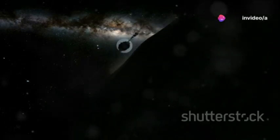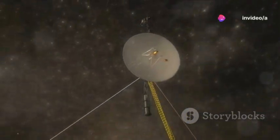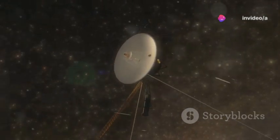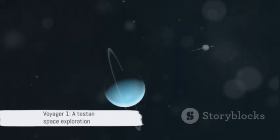Voyager 1's eventual death is inevitable, not from collision or catastrophe, but simply when its power supply runs out. However, this won't halt its journey. Like an interstellar ghost ship, it will remain on its trajectory, coasting through the cosmos indefinitely. Can you imagine?